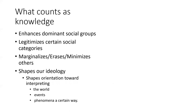What counts as knowledge typically enhances dominant social groups. It legitimizes certain social categories, which ultimately leads to marginalizing, erasing, or minimizing other groups. That knowledge shapes our ideology — our belief systems — orienting us toward interpreting the world and social phenomena in ways that privilege those already in power. Anion's study examined 17 well-known secondary school U.S. history books approved by school boards of two large urban school systems in the Northeast.